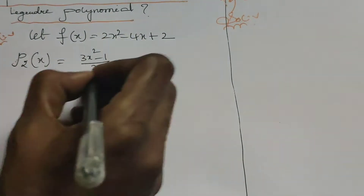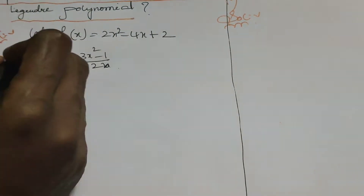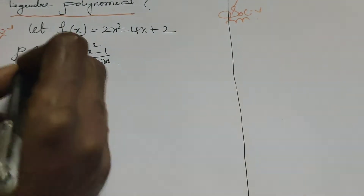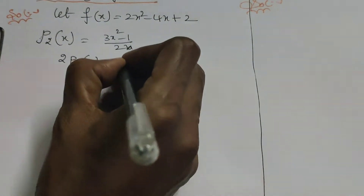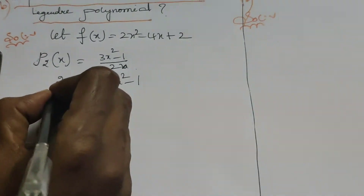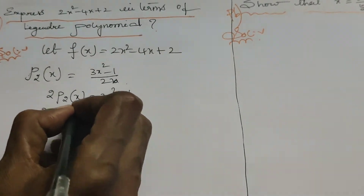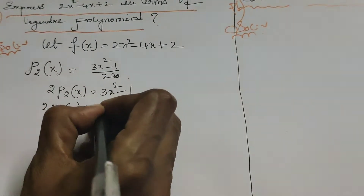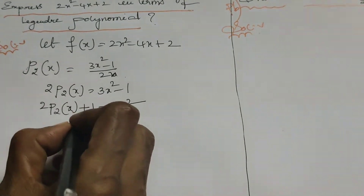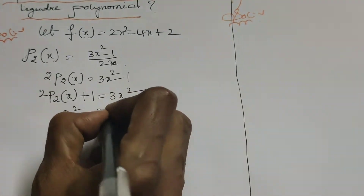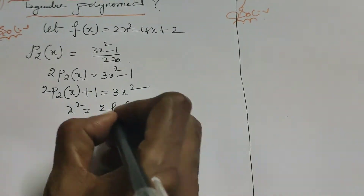So P2(x) = (3x² - 1) / 2. Multiplying both sides by 2: 2·P2(x) = 3x² - 1, which gives 2·P2(x) + 1 = 3x². Therefore, x² = (2·P2(x) + 1) / 3.